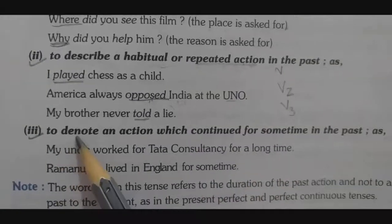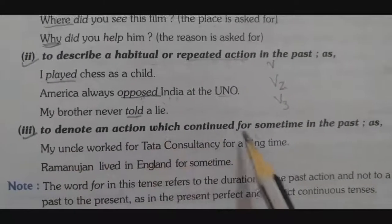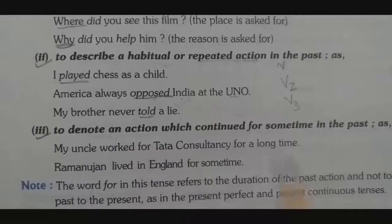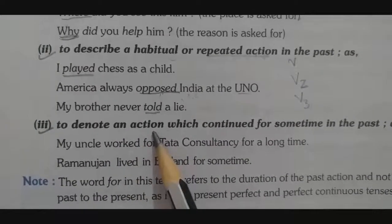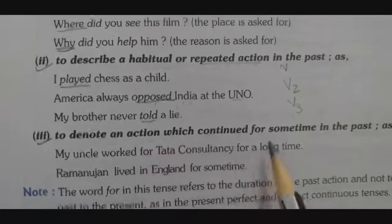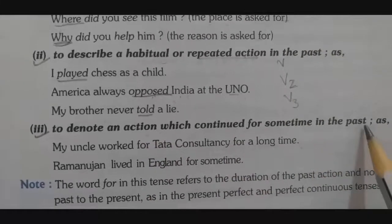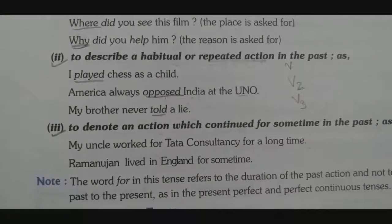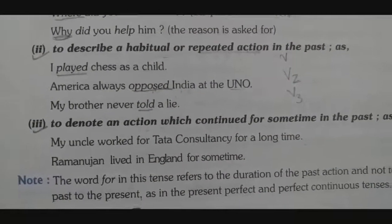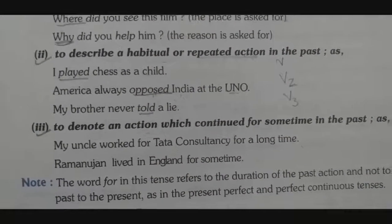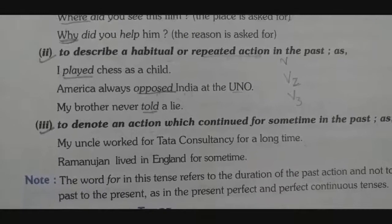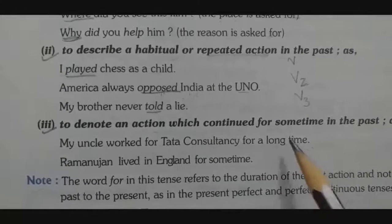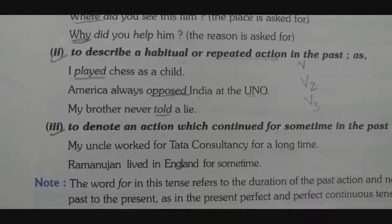Point number three: simple past tense is used to denote an action which continued for some time in the past. For example, an action happened for some time yesterday — in the past, for a certain duration. Those verbs are used in simple past tense.